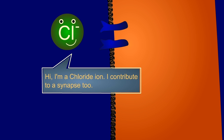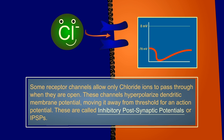Hi! I'm a chloride ion. I contribute to a synapse, too. Some receptor channels allow only chloride ions to pass through when they are open. These channels hyperpolarize dendritic membrane potential, moving it away from threshold for an action potential. These are called inhibitory postsynaptic potentials, or IPSPs.